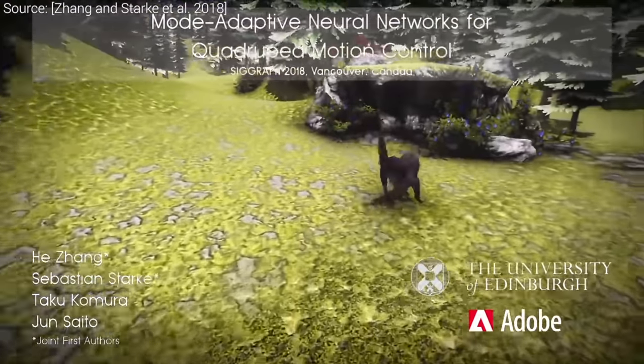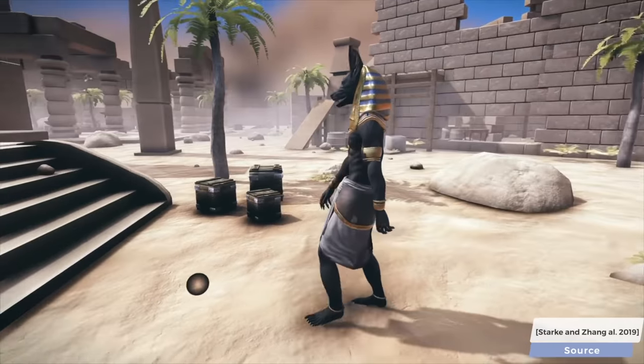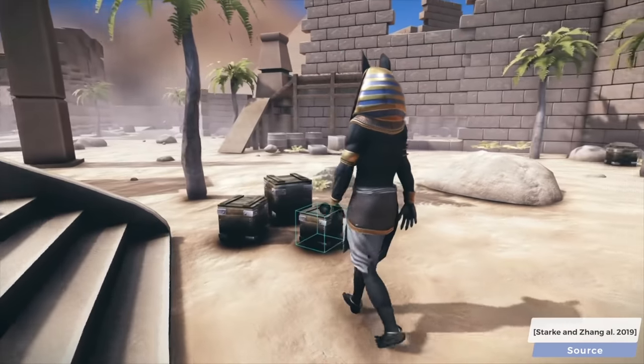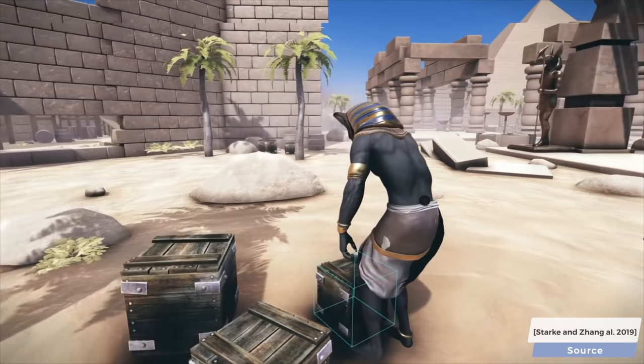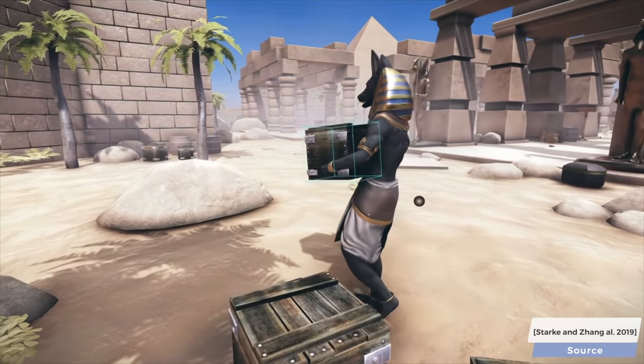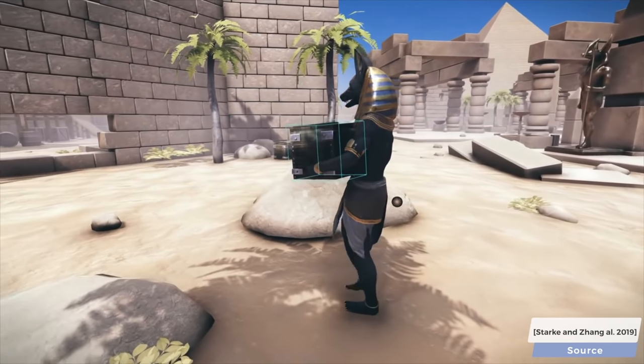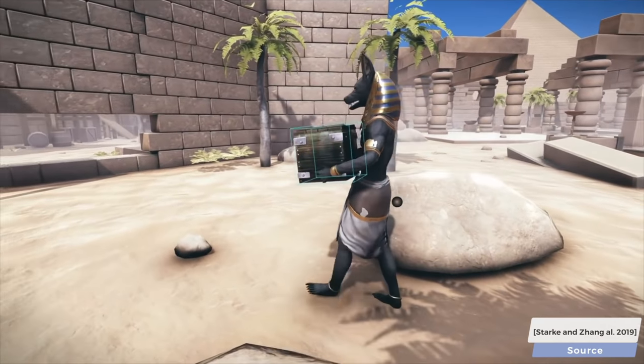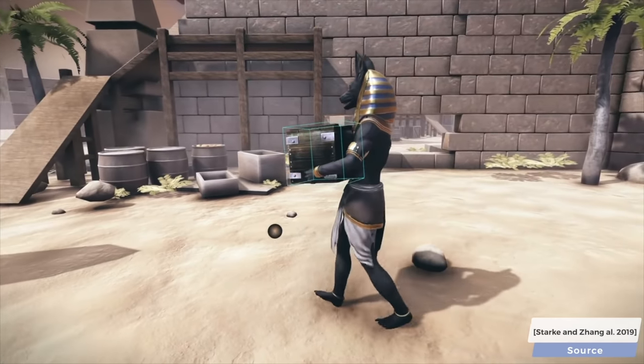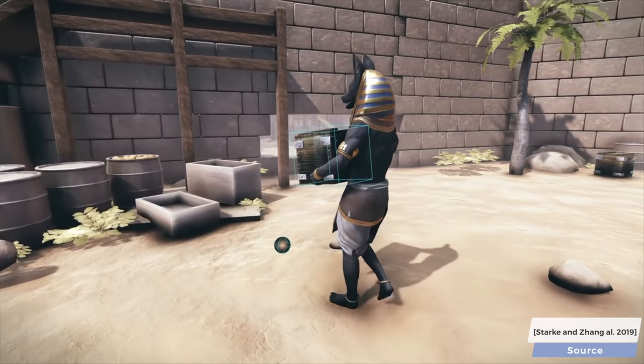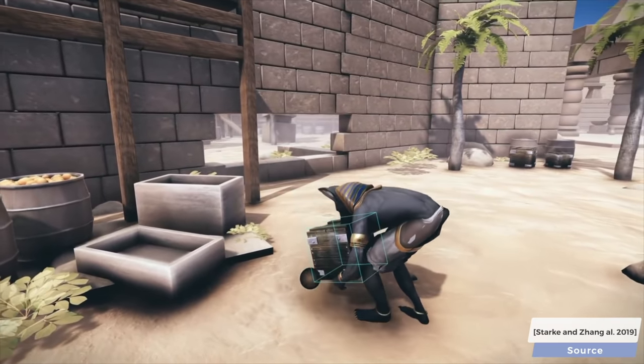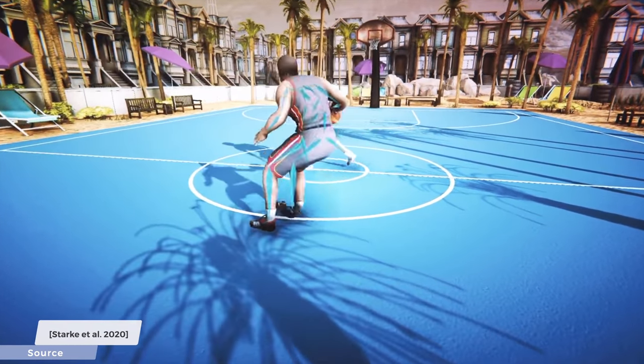Previous techniques have tackled quadruped control, and we can even teach bipeds to interact with their environment in a realistic manner. Today, we will have a look at an absolutely magnificent piece of work where the authors carved out a smaller subproblem and made a solution for it that is truly second to none. And this subproblem is simulating virtual characters playing basketball.